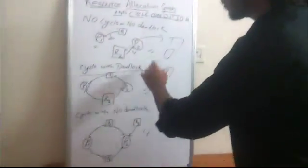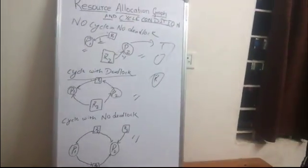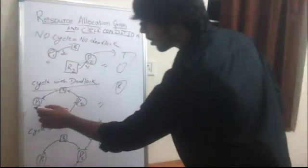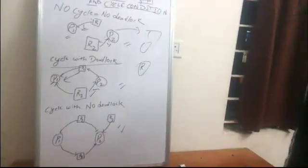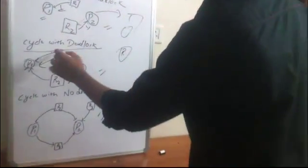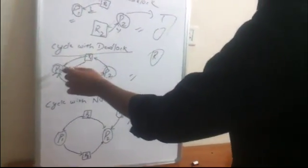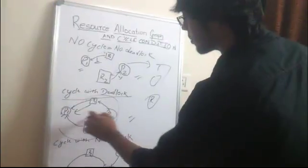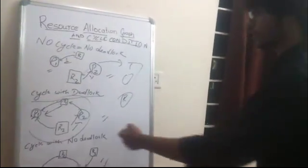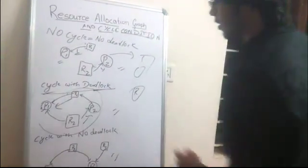Now let's see a situation with cycle and deadlock. P1 requests R1 and gets allocated, similarly P2 requests R2 and gets allocated. P2 also requires R1 and P1 also requires R2. As you can see there is a cycle, and neither of them get executed. So there is a cycle and there is a deadlock.